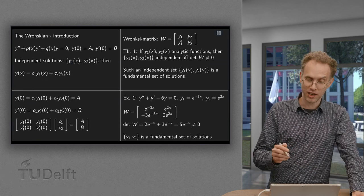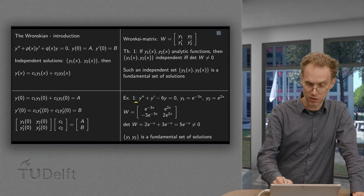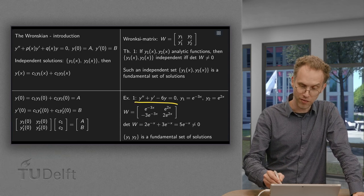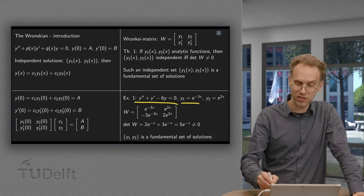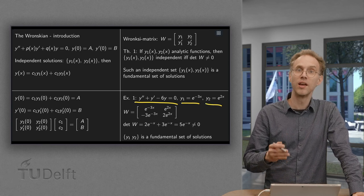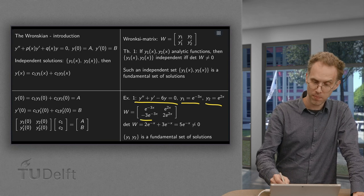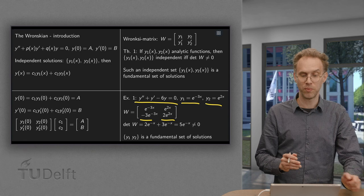So the determinant of some simple matrix has to be non-zero. So what happens in a specific example? We had this problem here, y'' + y' - 6y = 0. We found solutions, e^(-3x) and e^(2x). Put them in the Wronskian matrix, so y1 and y1' and y2 and y2' in the second column.